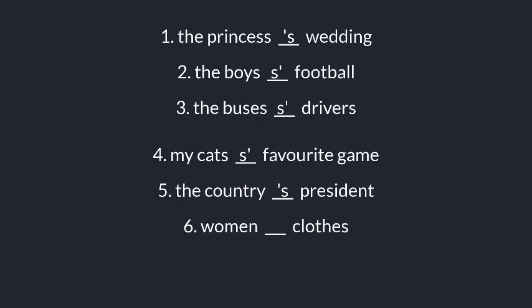Number seven: 'the sheep ___ wool.' Here 'sheep' is a noun — it can be singular or plural, but if it is plural it still does not end with an S, so the answer will be apostrophe S. Number eight: 'Tom and Jack ___ mother.' Here the answer will be apostrophe S.